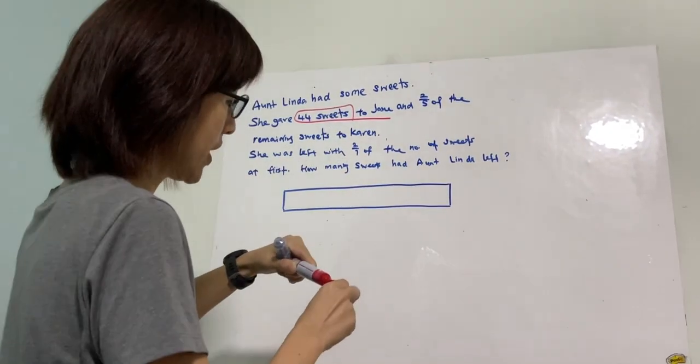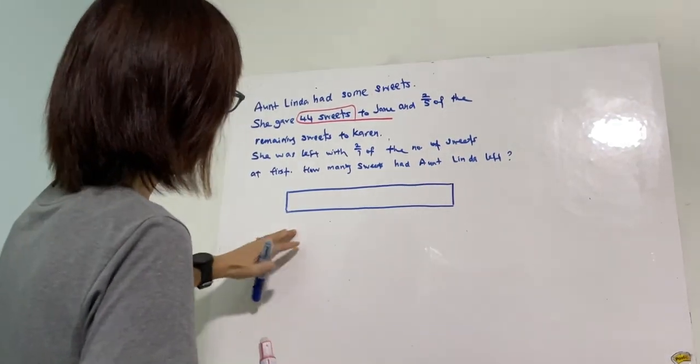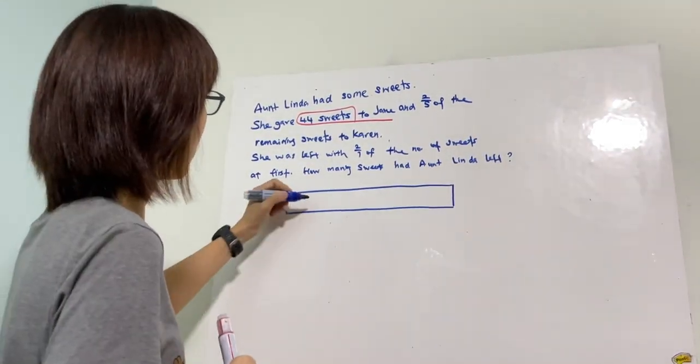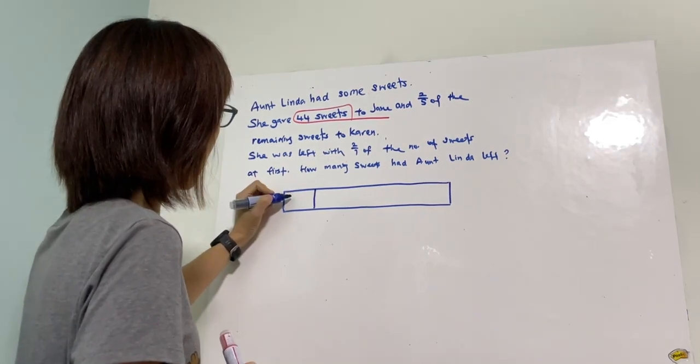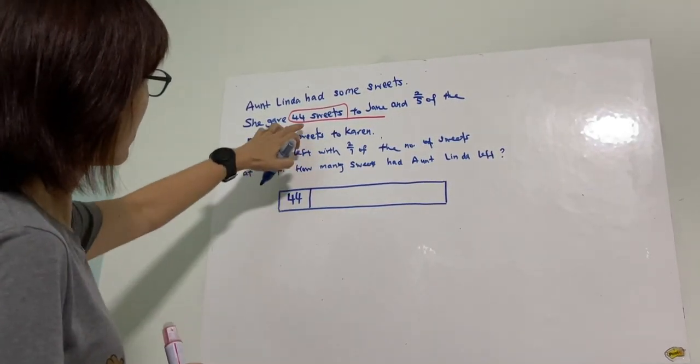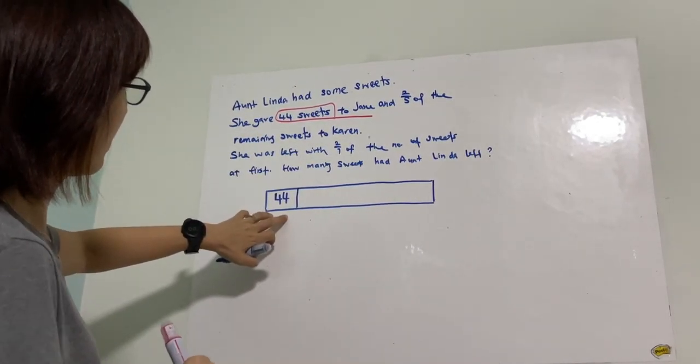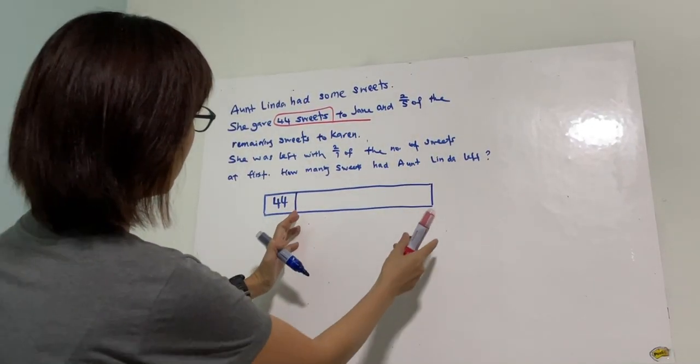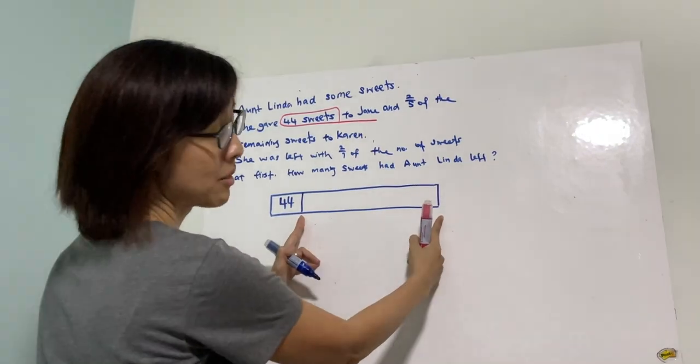All of this, which is the total amount of sweets, I'm going to cut a portion of it and put down 44. So this refers to 44 sweets given to Jane, which means that the remaining number of sweets will be this portion.